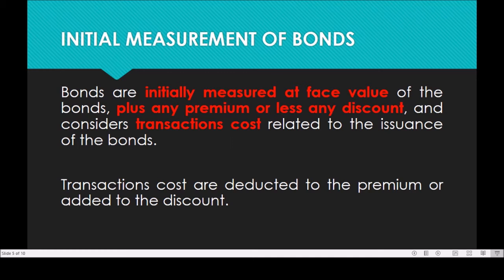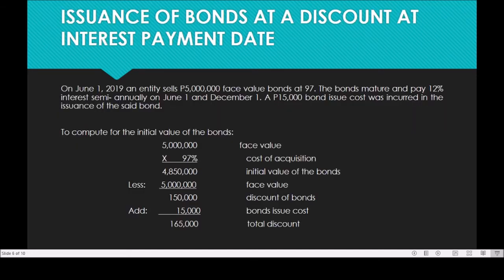The first illustrative example is the issuance of bonds at a discount at interest payment date. As of now, the problem covers issuance of bonds at interest payment date.